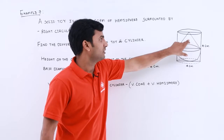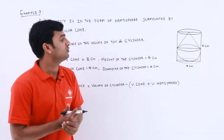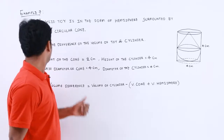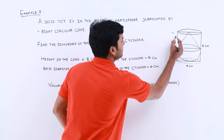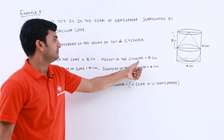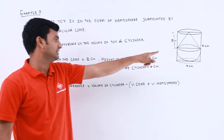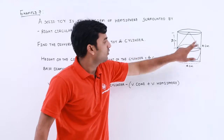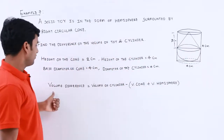The toy is surmounted by a right circular cone, and this toy is circumscribed by a cylinder. We have to find the difference between the cylinder volume and the toy volume. The measurements are: height of cone = 2 cm, height of the complete cylinder = 4 cm, base diameter of cone = 4 cm, and diameter of cylinder = 4 cm. The base diameter of the cone and the cylinder are the same, that is 4 cm.